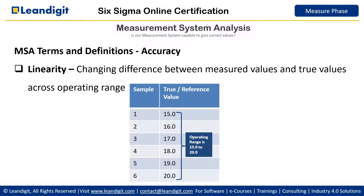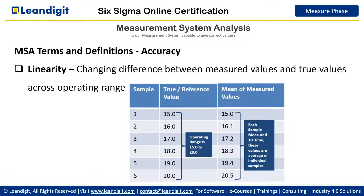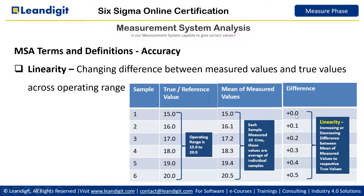Now let us take the same samples but with another instrument. When we measured the sample with true size 15 ten times, the average came out exactly 15. But when we measured sample 2, which has actual size 16, we got 16.1. When we measured 17 ten times and took the average, it came to 17.2. We see this bias is increasing as the value of the sample increases. When there is an increasing or decreasing difference between the measured value and the true value across the operating range, we call it linearity.